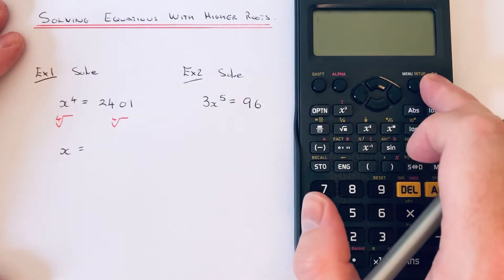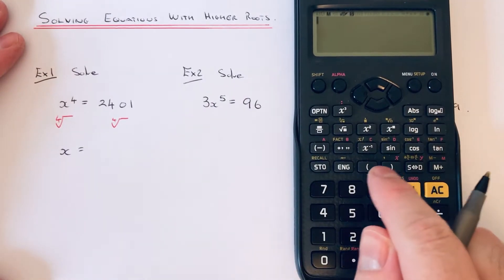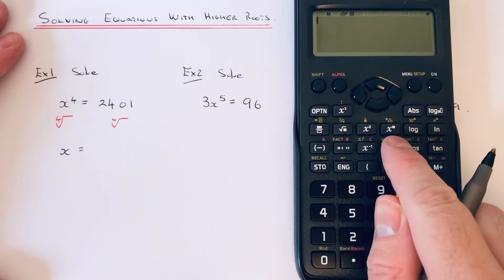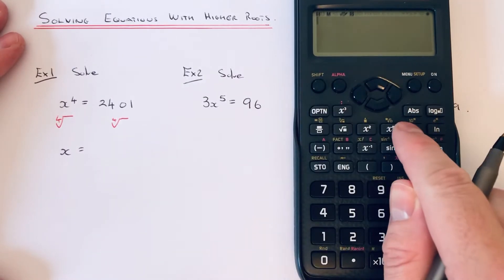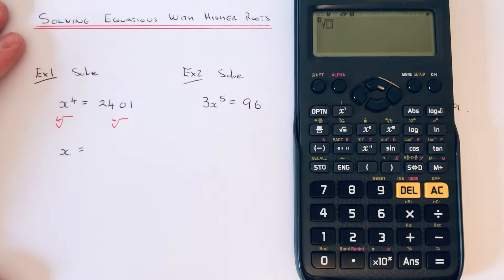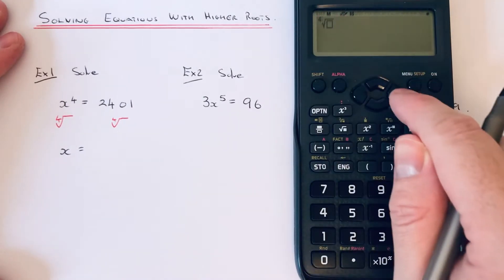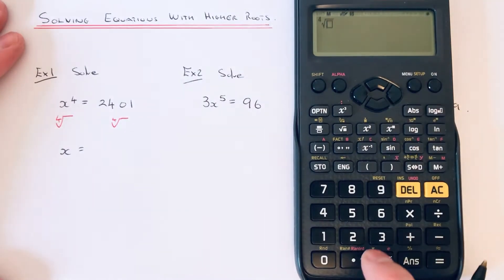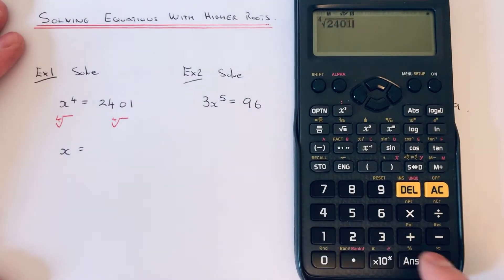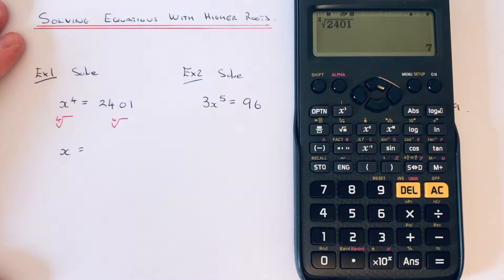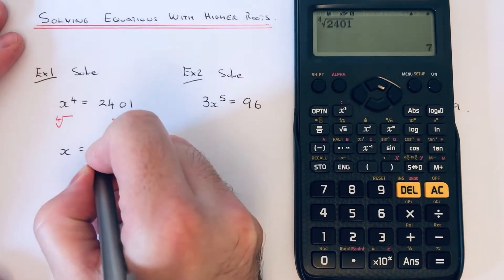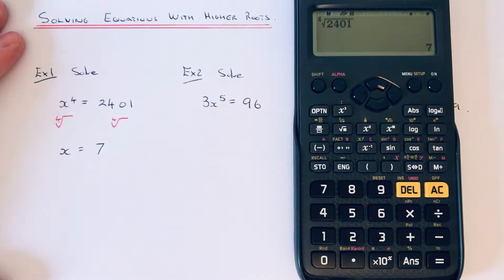To get the fourth root, we need to go shift the power key. We need to put a 4 in the box on the roots, and our number inside is 2,401. We get an answer of 7.